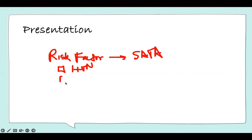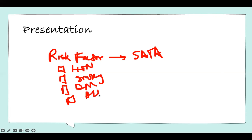Smoking is not good for the vessel — it causes vessel constriction. Diabetes makes vessels not pliable. Hyperlipidemia — all of them are risk factors. They cause sclerosis, thickening, impaired blood flow, and then the aneurysm starts forming. Of course, family history — if this is in your family, you can get it. Age is also a factor.